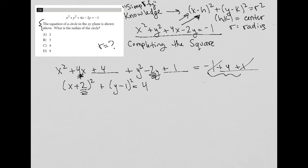Which means that my r squared term is equal to 4, and therefore r is equal to the square root of 4, which is 2. So therefore, my answer is choice A.